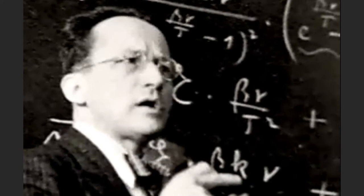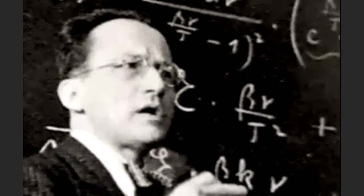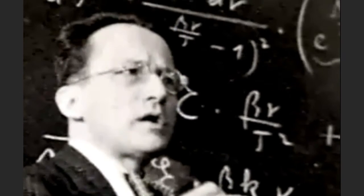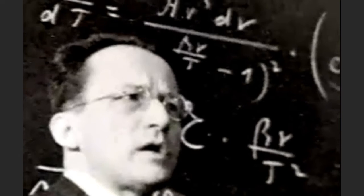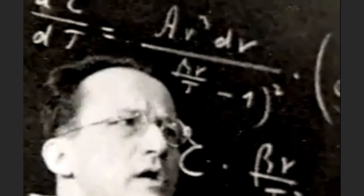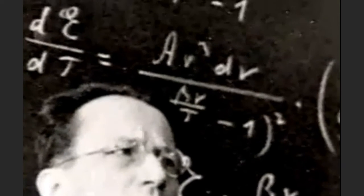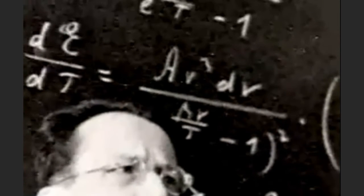In May of 1926, an Austrian physicist named Erwin Schrödinger published his theory on wave mechanics, which offered an alternative to Bohr's particle theory.